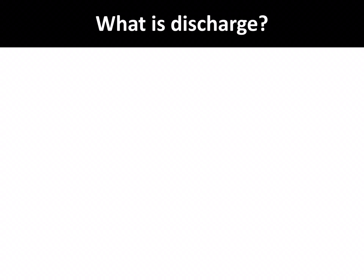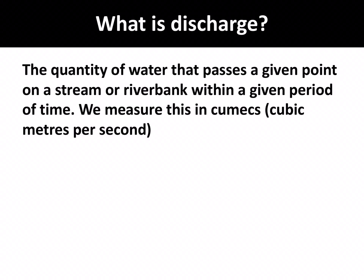Discharge is the quantity of water that passes a given point on a stream or riverbank within a given period of time. We measure this in cumecs — cubic metres per second.